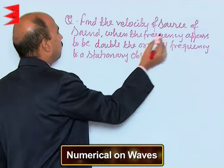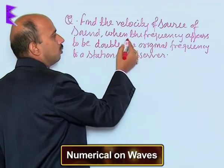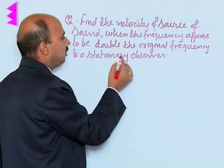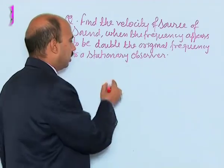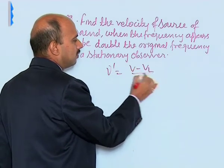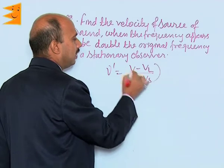Now see how to find the velocity of source of sound when the frequency appears to be double the original frequency to a stationary observer or listener. We know apparent frequency is equal to V minus V L upon V minus V s into nu.